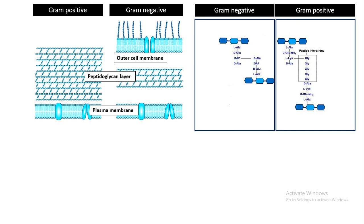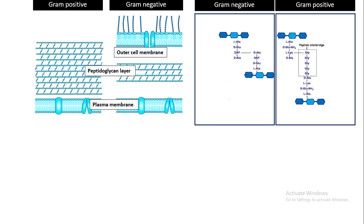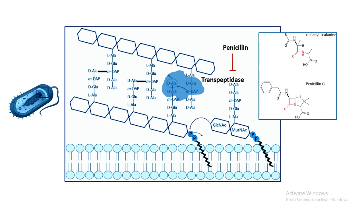Let's look at a bit more detail in cell wall composition. Gram-positive bacteria have a much thicker cell wall, whereas gram-negative bacteria have a thinner cell wall and also an outer membrane. In gram-negative bacteria, the pentapeptides are linked to each other by direct peptide bonds. Whereas in gram-positive bacteria, there are specific peptide interbridges connected to the pentapeptides. Gram-positive bacteria are also more vulnerable to antibiotics.